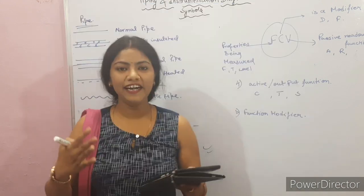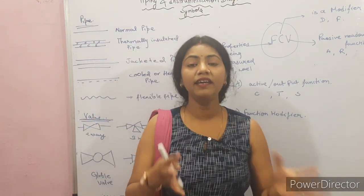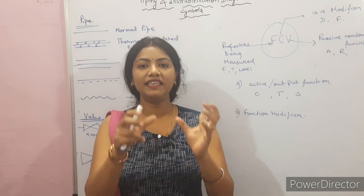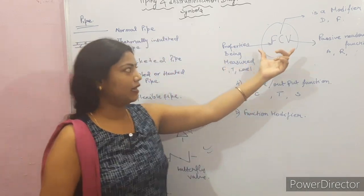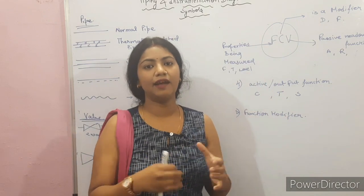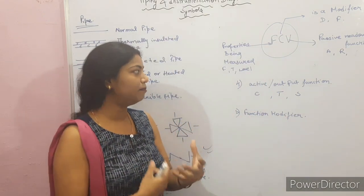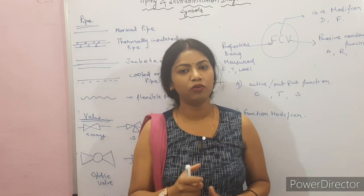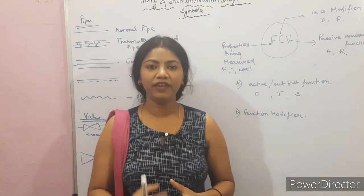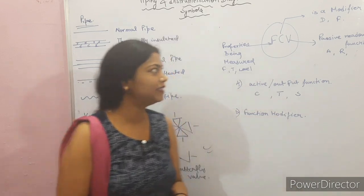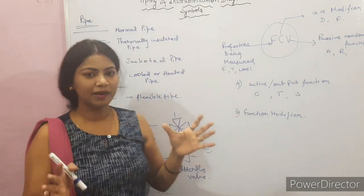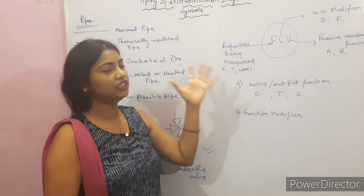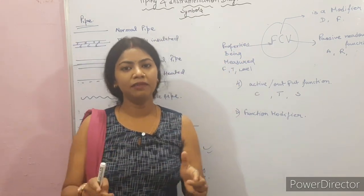You should learn this chart by heart. From any given symbol you should be able to identify what it represents — for example, level control element. I will give you questions based on it, and if there is any difficulty we will solve it on the channel. This was a small but newly added chapter on piping and instrumentation diagrams. If you have any doubt, you can ask in the comment box.